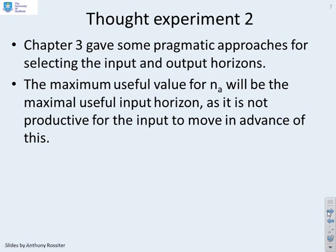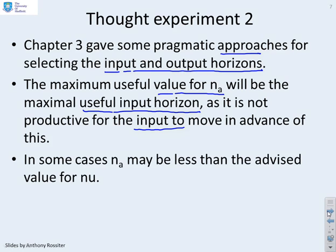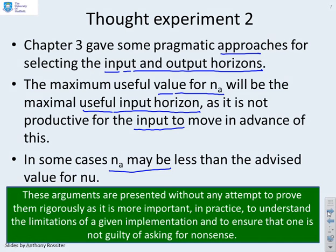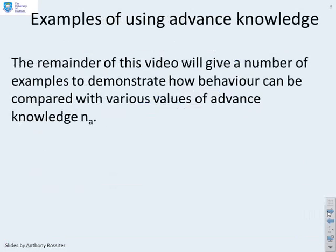Second thought experiment. Chapter 3 gave some pragmatic approaches for selecting the input and output horizons. Now we're going to use similar pragmatic approaches. The maximum useful value of NA will be the maximal useful input horizon, as it's not productive for the input to move in advance of this. In some cases, NA may be less than the advised value for Nu. These arguments are presented without any attempt to prove them rigorously, as it's more important in practice to understand the limitations and ensure that one is not guilty of asking for nonsense.